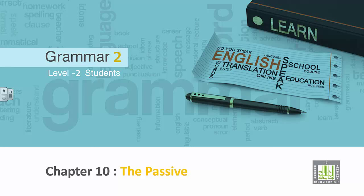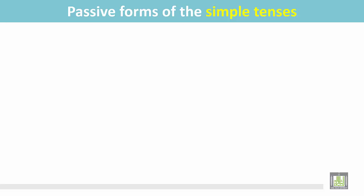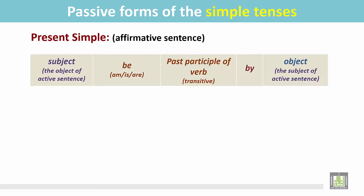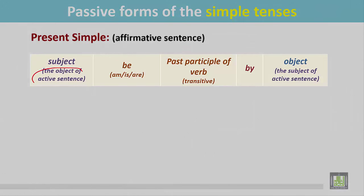Grammar 2 for level 2 students, chapter 10: the passive — passive forms of the simple tenses. Present simple affirmative sentence: see this structure. The subject is the object of the active sentence, then the be verb is or are, and the past participle form of the transitive verb, and then the preposition 'by' and the subject of the active sentence.